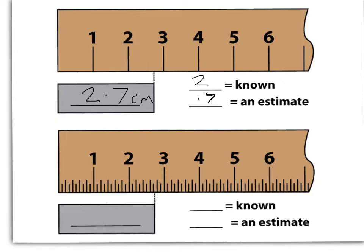Now when we go down to the bottom, we've got a little bit more information. And now we can see that the known numbers are actually 2.7. But because of the scale, we can estimate up to the hundredth.